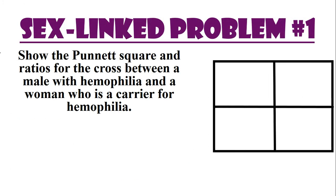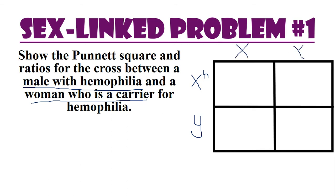Let's apply this to a problem: show the Punnett square and ratios for a cross between a male with hemophilia and a woman who is a carrier. The male with hemophilia goes down the side: X^h Y. The carrier woman goes across the top: X^H X^h — carriers are heterozygous, one capital H and one lowercase h.